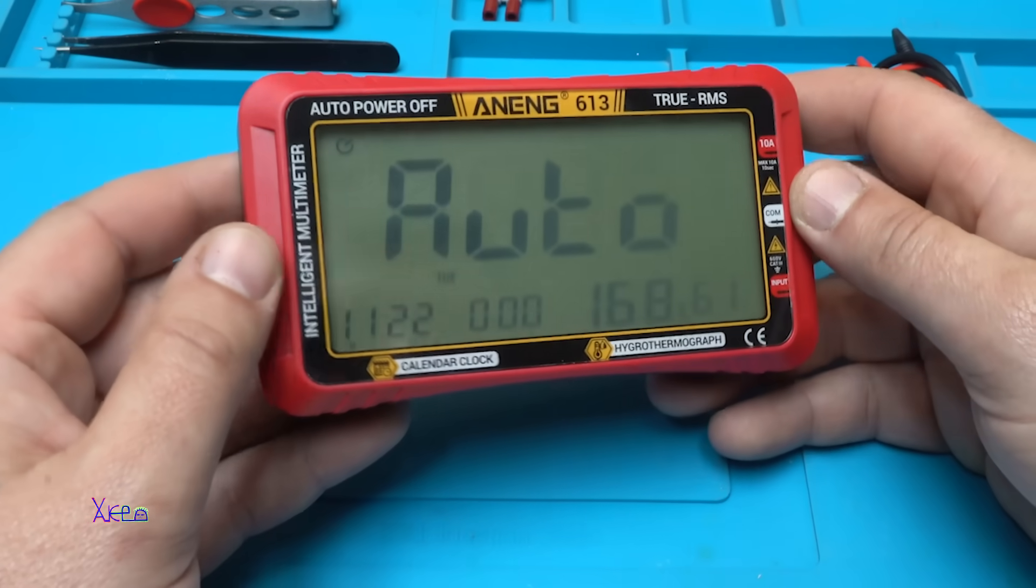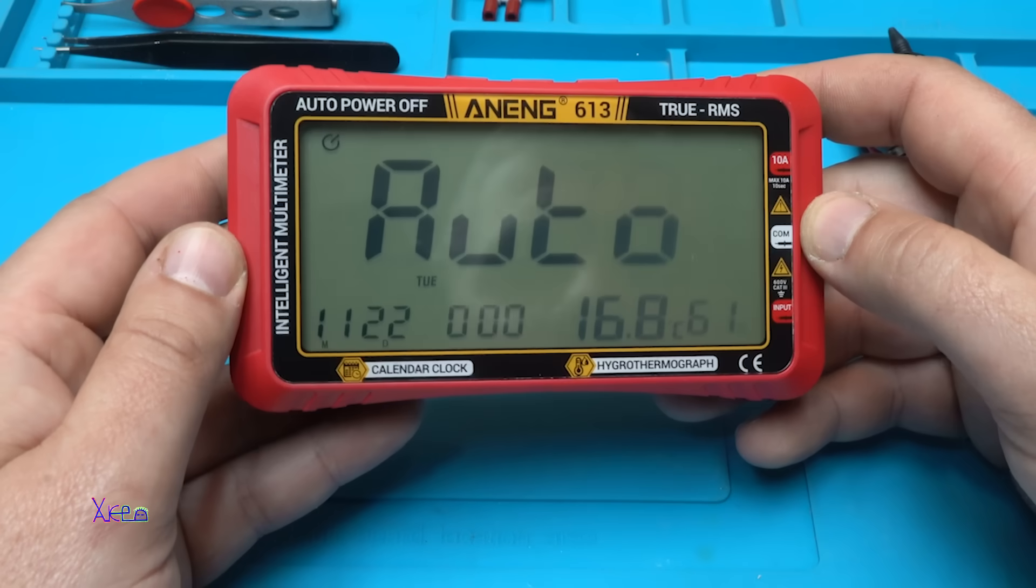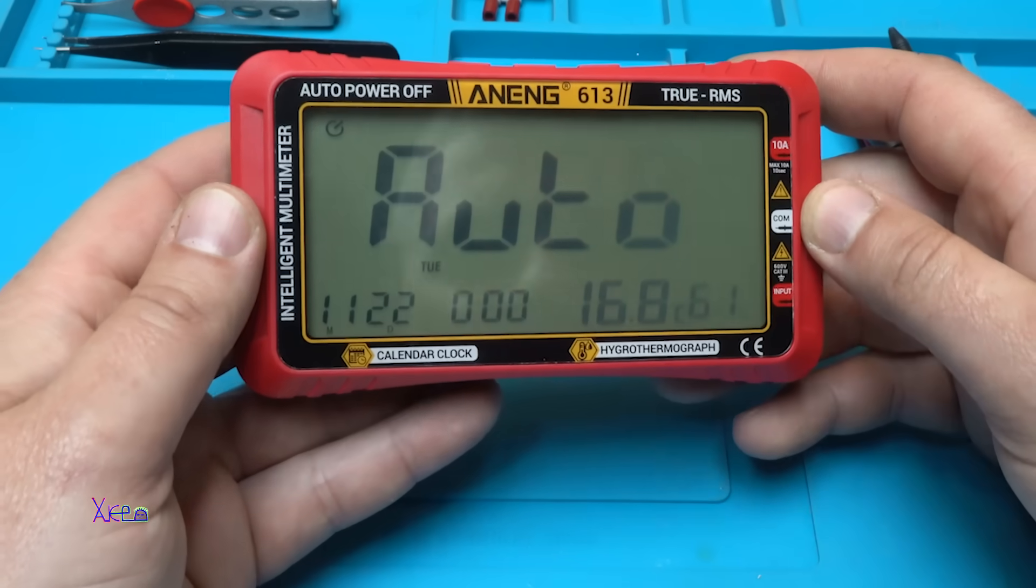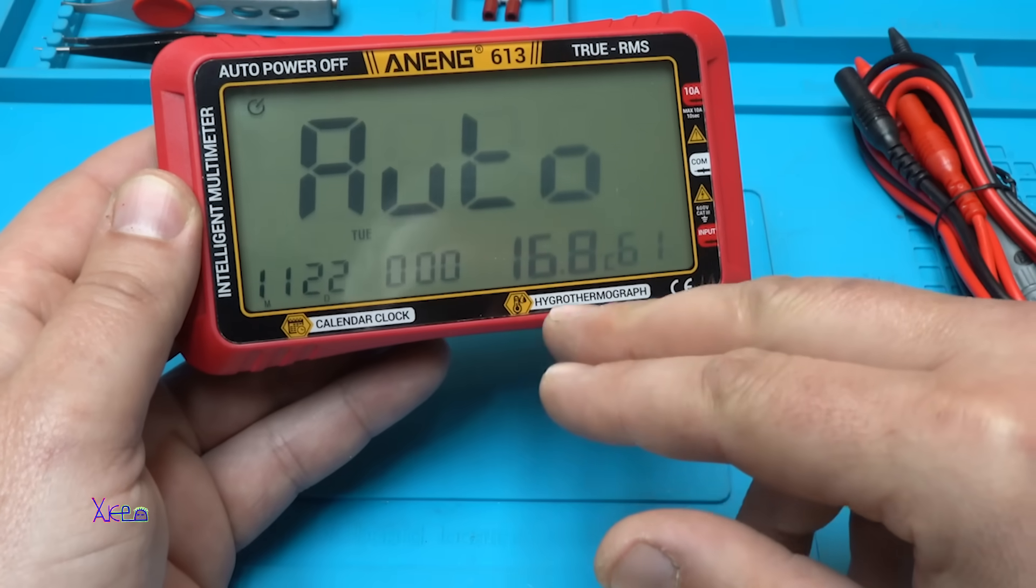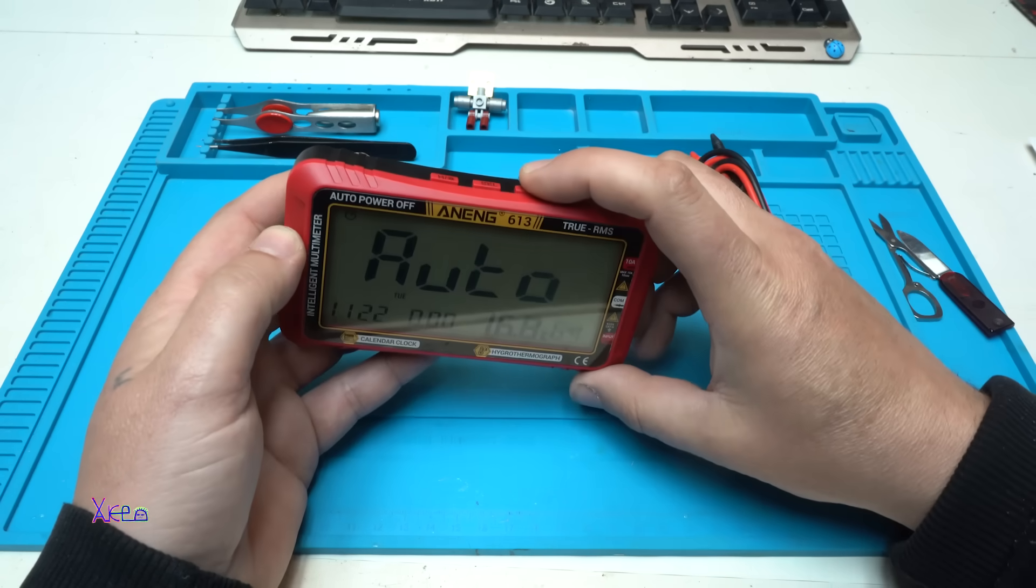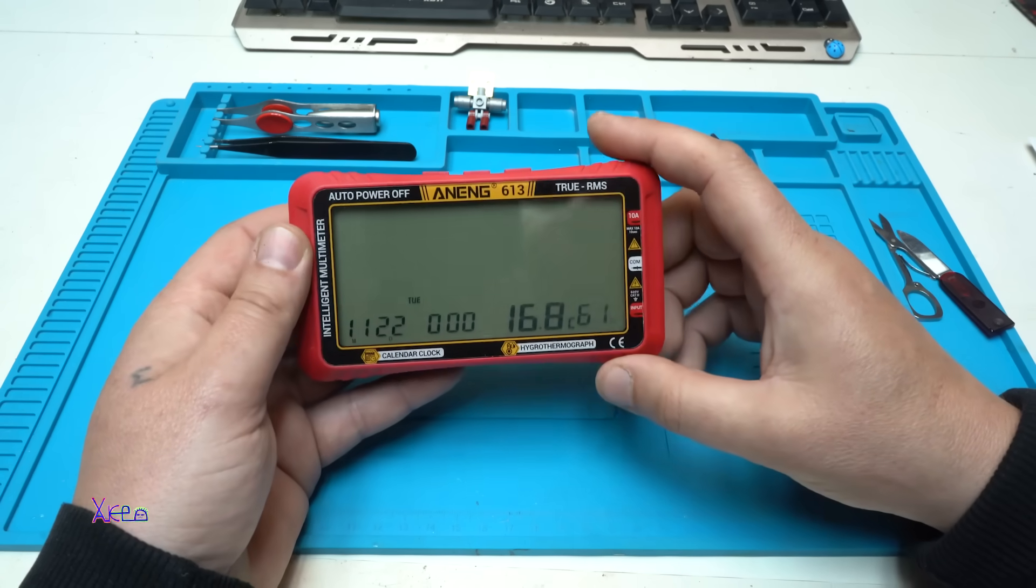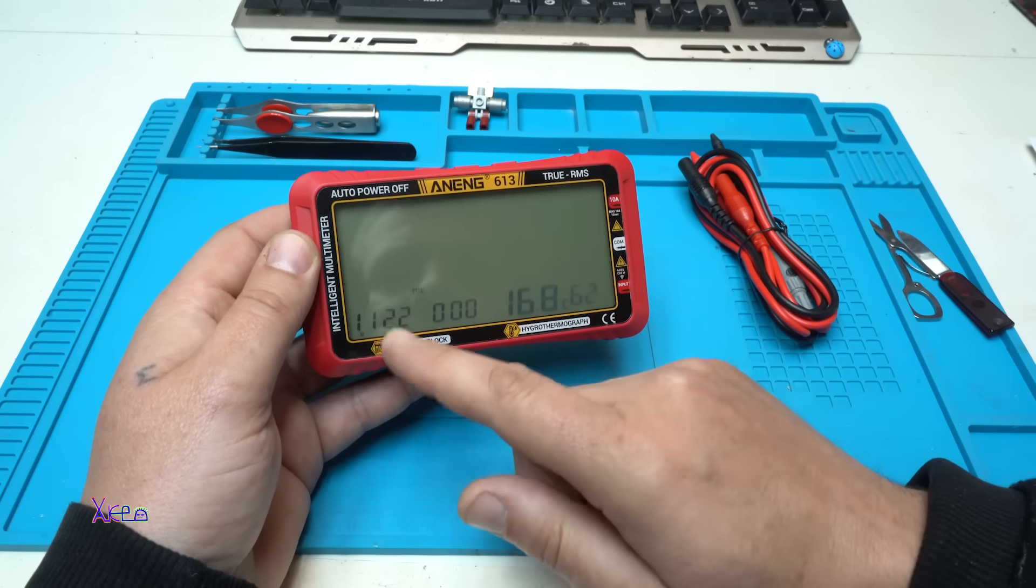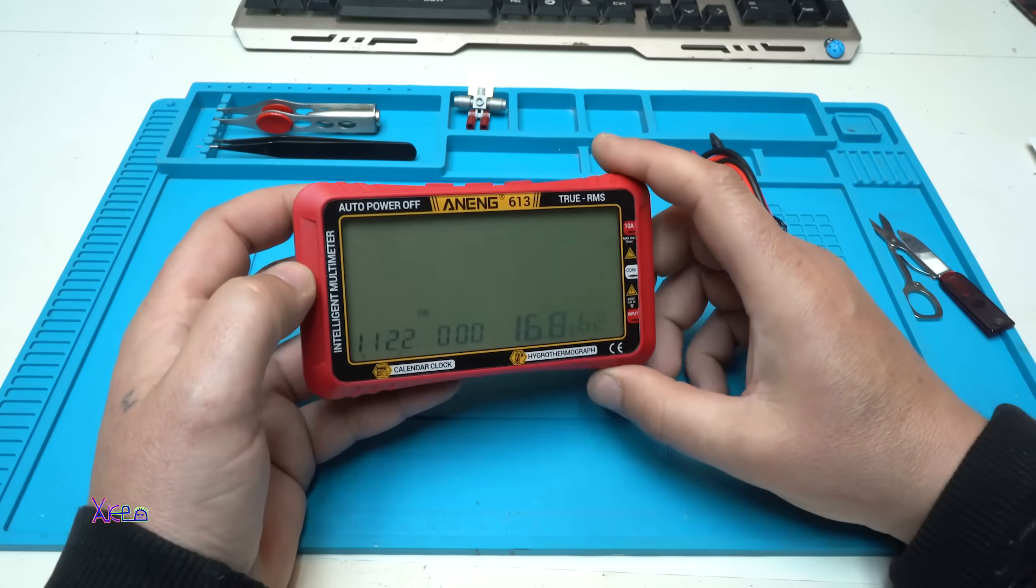Take a look at the screen. It's so big. It has the date, the clock, it shows the temperature and the humidity. Let's turn it off. When it's off, it still shows the date, the time, the temperature and the humidity. That is nice.